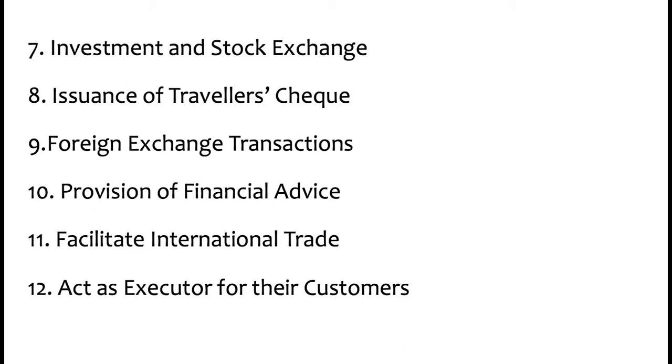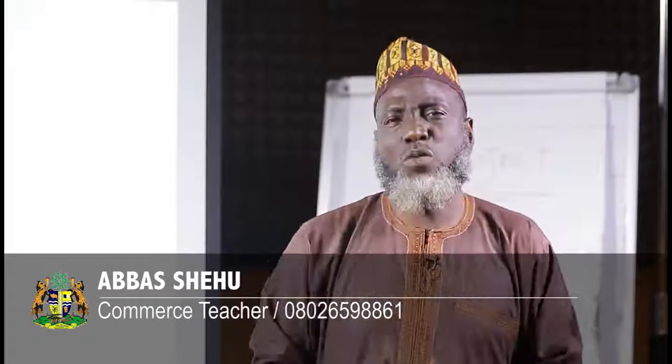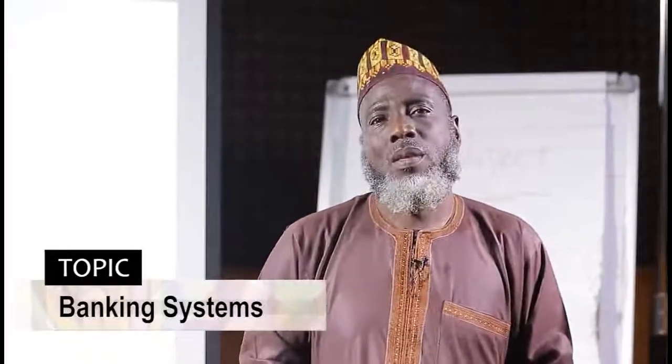Number seven — wait, number six — is investment and stock exchange. This is talking about where the bank serves you as a customer in terms of investing your money. Through the stock exchange, they can buy you shares — they can invest your money by buying shares on your behalf, shares that will from time to time bring money to you.